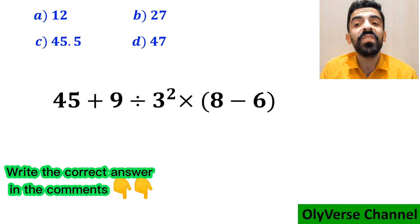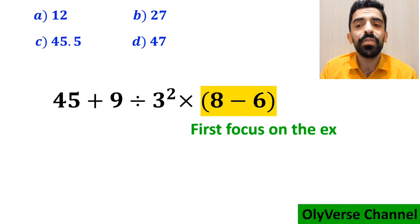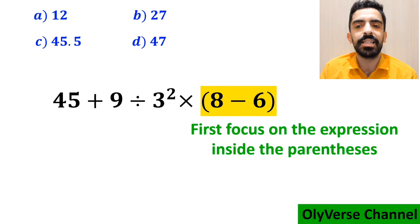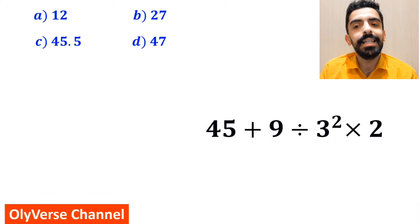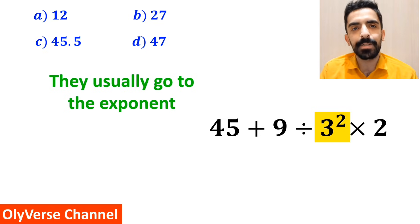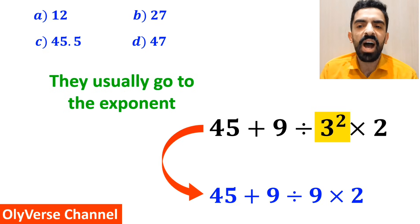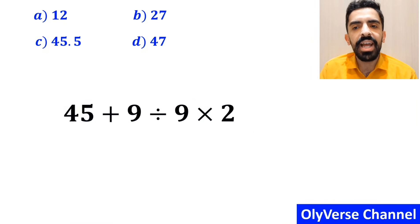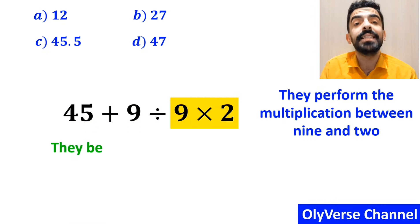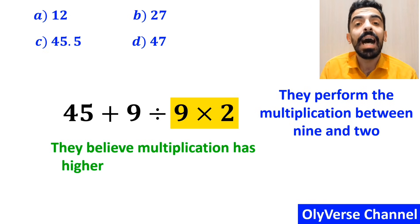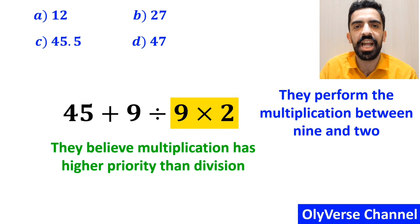Some other people, when solving this question, first focus on the expression inside the parenthesis and replace the whole expression with 45 plus 9 divided by 3 to the power of 2, multiplied by 2. In the next step, they go to the exponent and simplify it to 45 plus 9 divided by 9 multiplied by 2. Then they perform the multiplication between 9 and 2, because they believe multiplication has higher priority than division.